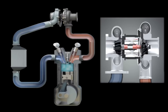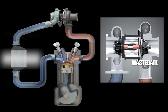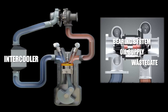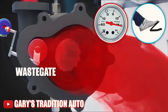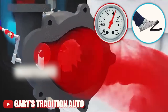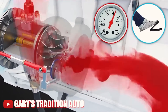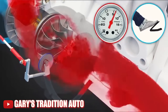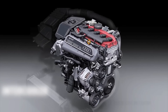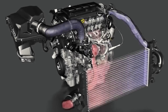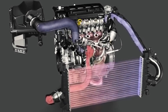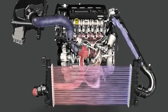Other significant components of a turbocharger include the wastegate, intercooler, bearing system, and oil supply. The wastegate serves as a valve that regulates the flow of exhaust gases through the turbine. Its primary purpose is to control the boost pressure and prevent the turbocharger from over-speeding. The intercooler comes into play by cooling the compressed air from the compressor before it enters the engine. This cooling process increases the air density, resulting in more oxygen available for combustion, thereby generating more power from the engine.